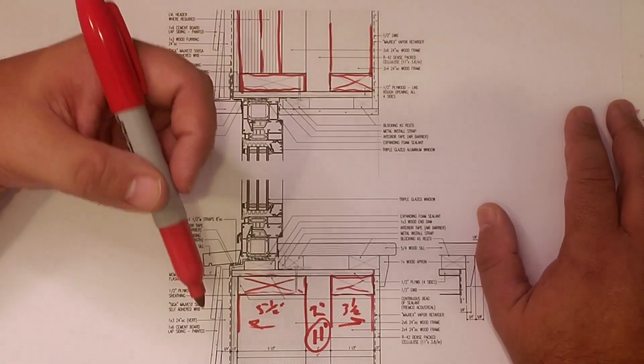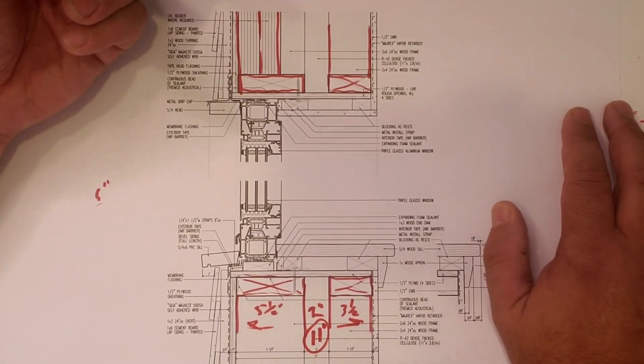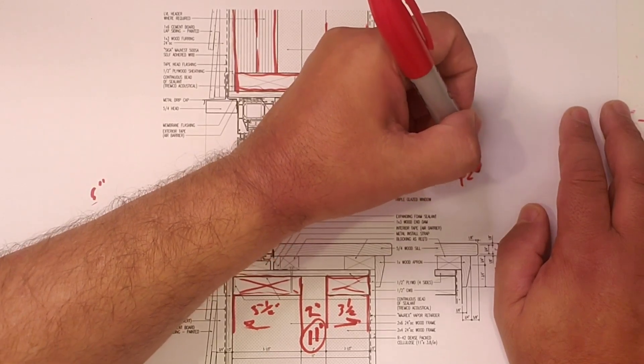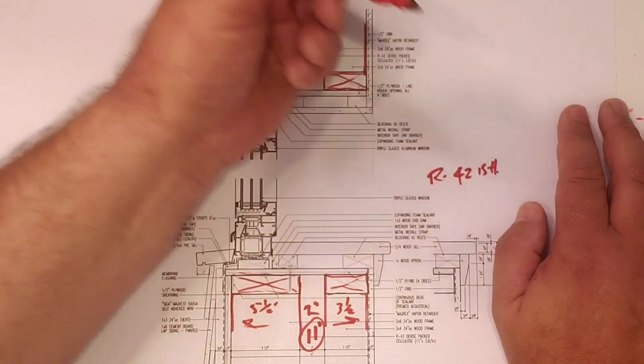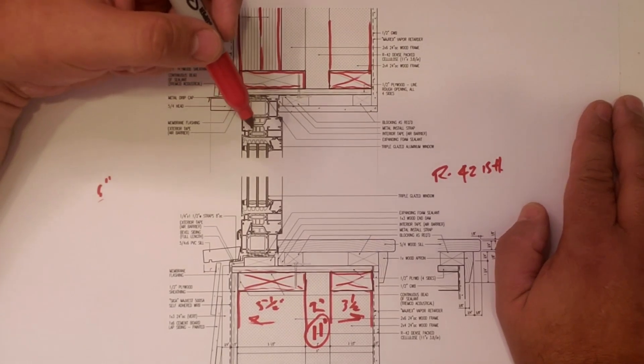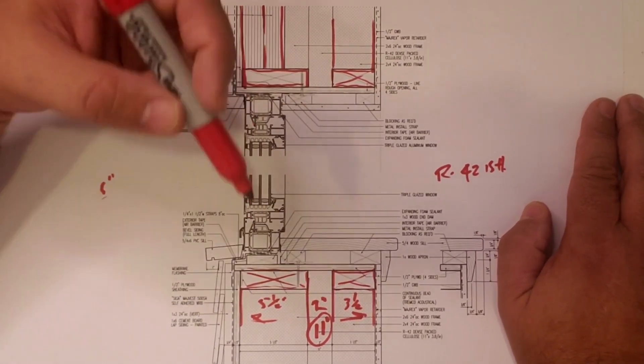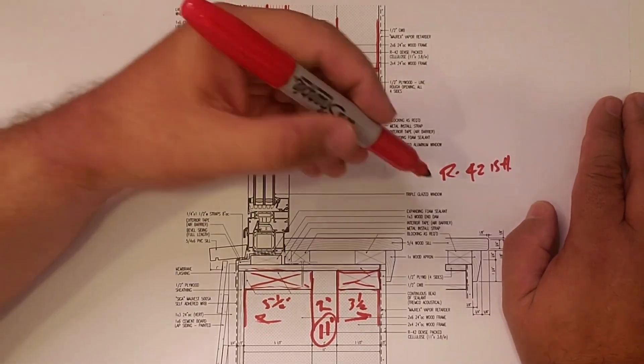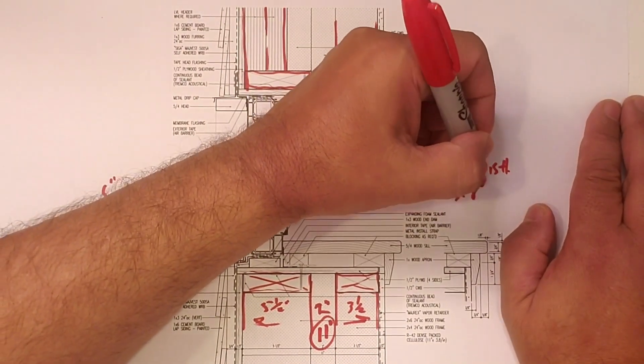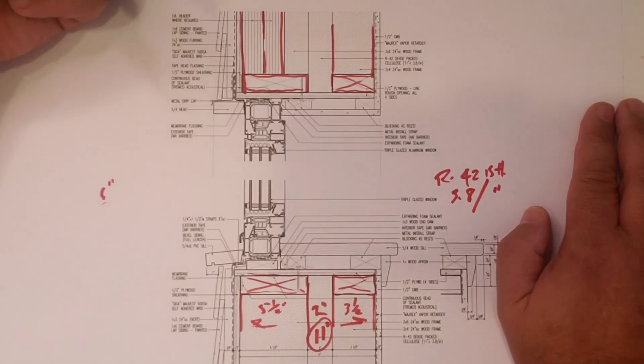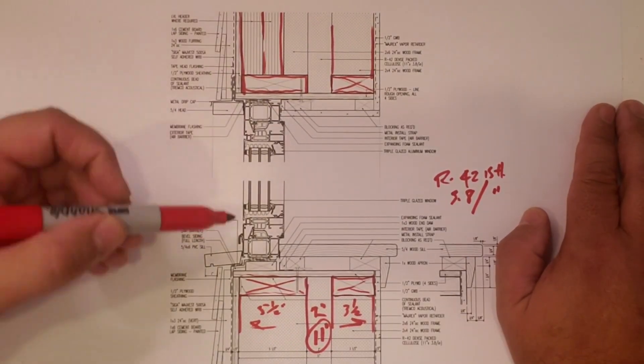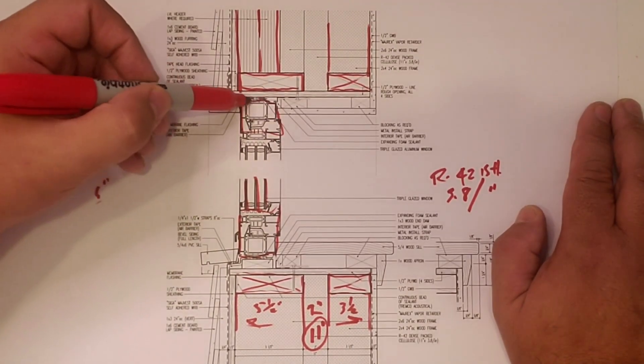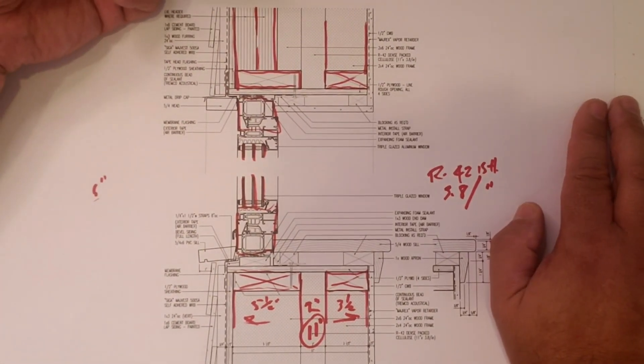So that's going to give us probably right around R42-ish, something like that in the low 40s, which is a really good number. We're going to fill the whole thing up with cellulose, all 11 inches of it. So I run with about 3.8 per inch. And then of course we have the windows here. You can see the windows there, triple glazed, no frame there, triple glazed.